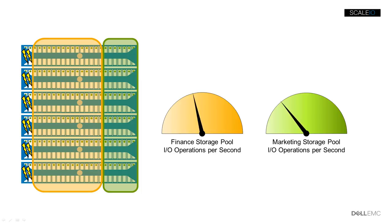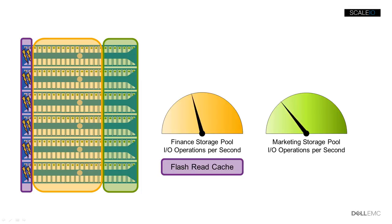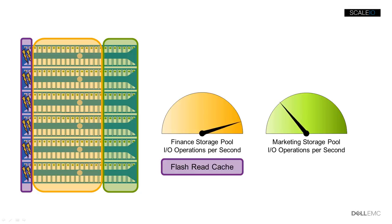These servers contain SSDs as well as spinning media. Those SSDs are available and can serve as a read cache. Addition of the read cache will further accelerate the finance storage pool. Once the end-of-quarter processing is complete, the administrator can return the storage resources back to their original configuration.